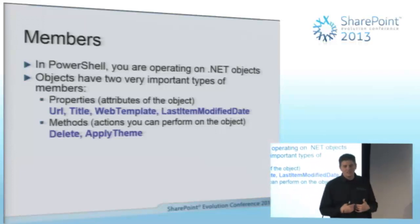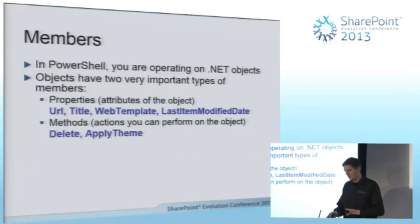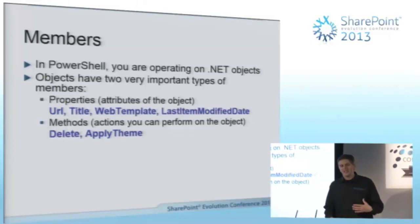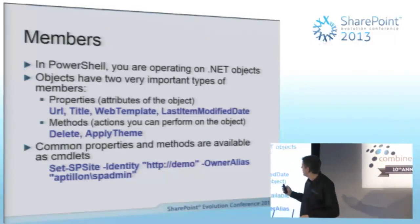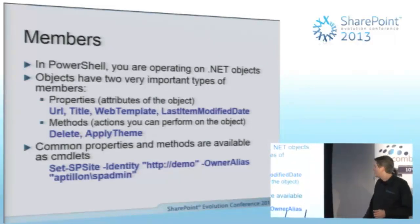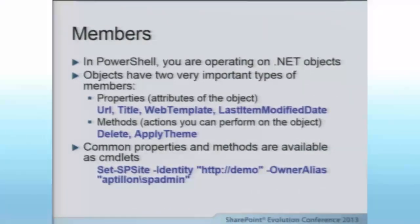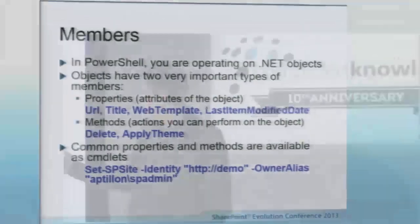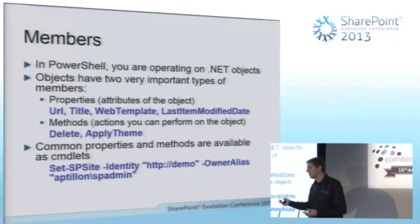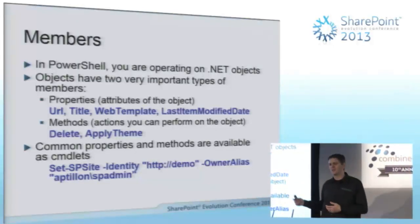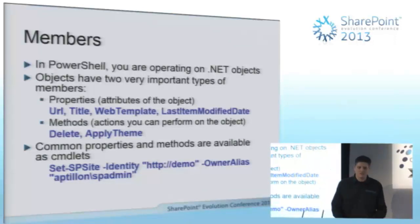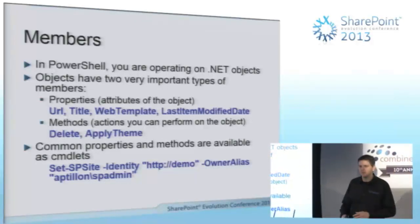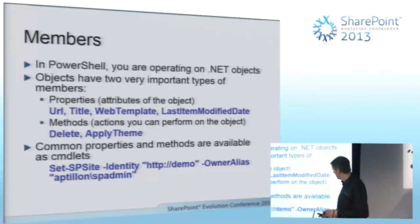I have a Get-SPList cmdlet you can download with my extensions. But working with PowerShell, it's not really enough just to know the cmdlets available — you've got to be familiar with the object model. Some common properties and methods have cmdlets. Set-SPSite, for instance, lets you pass in the URL of a site collection and set the owner, among maybe five different properties. But if you're familiar with the SPSite object, there's a lot you can do — maybe 30 properties, 40 methods or whatever.